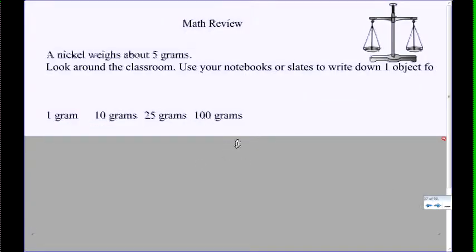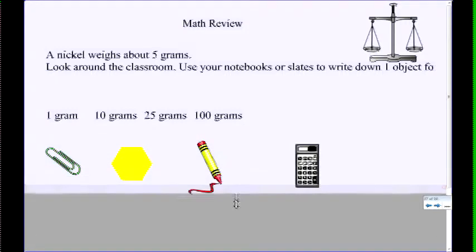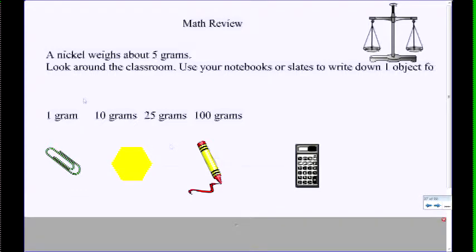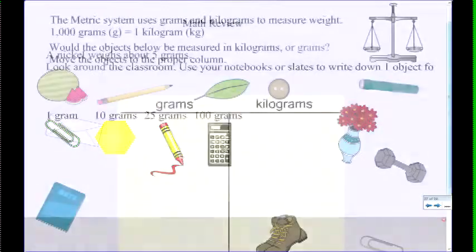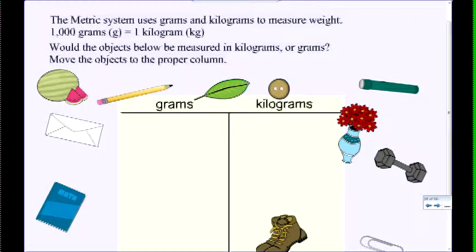Let's check to see if you have grams versus kilograms. Well, this is a review. Look around your classroom and see if you can find some things that are grams, ten grams, twenty-five grams, and a hundred grams. One gram. A shape. A crayon. And a calculator. I told you to get some objects that would go on a list of three for ounces and three for pounds. See if you can do the same for grams versus kilograms.